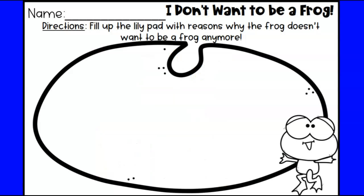Now in our story this week, 'I Don't Want to Be a Frog,' the author Dev Petty wrote this book to entertain you — it's a pretty silly story. But in the story, the little frog is trying to persuade his dad, telling him that he wants to be a different kind of animal. He gives his dad all these different reasons why he does not want to be a frog anymore — he doesn't want to be wet, he doesn't want to be slimy. He says he would rather be a pig, a cat, a rabbit, or an owl — something cute and warm. So he's trying to persuade his dad to let him be a different kind of animal.